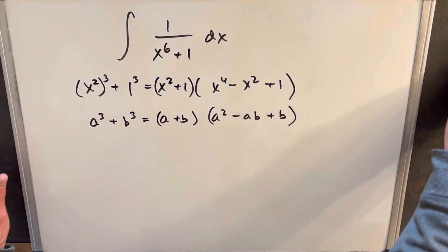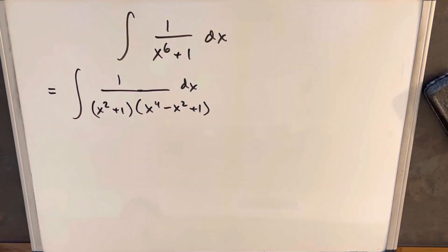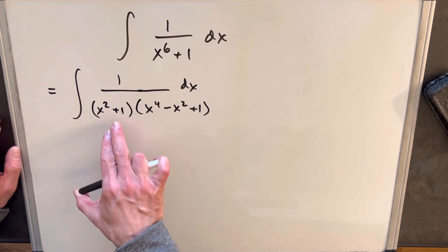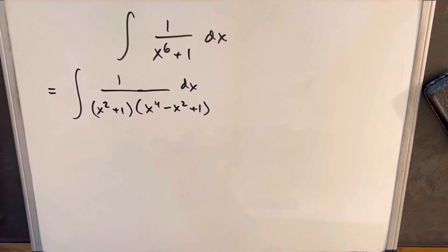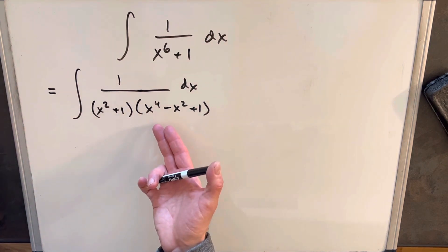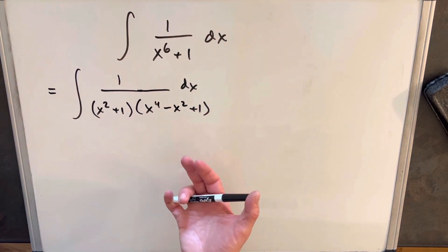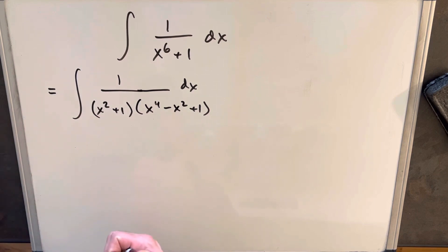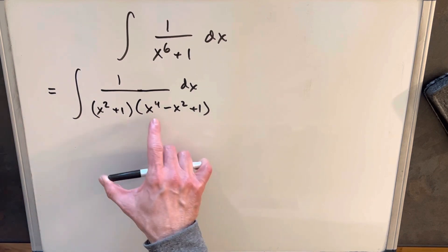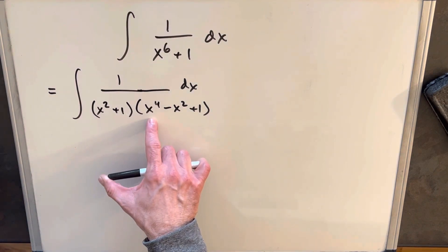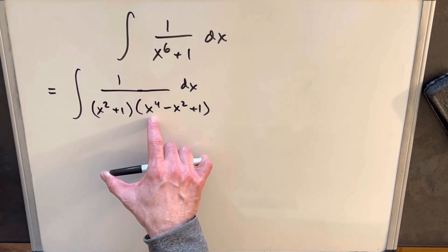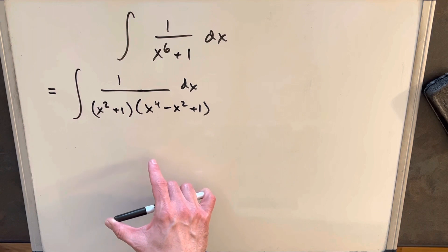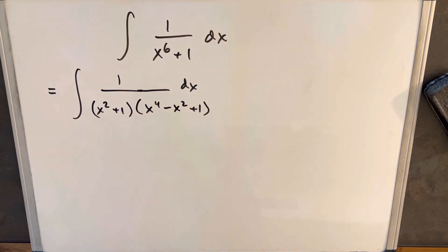Let's rewrite the integral in that factored form. Notice that with this product of polynomial terms, we could do partial fractions, but I'm going to try to avoid that. Since we have a 4th degree term, the partial fraction decomposition is going to be a little messy. So let's try something else.